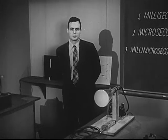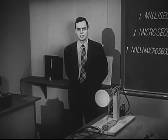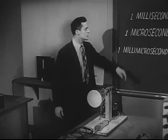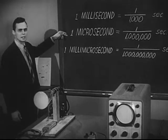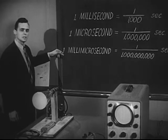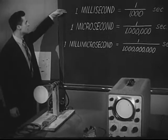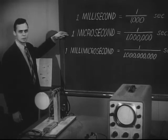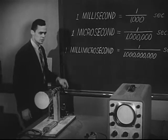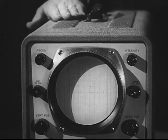As we continue to measure shorter and shorter times, it becomes more and more difficult to refer to them in the way we have. So let's use standard terminology: a thousandth of a second is a millisecond, a millionth of a second is a microsecond, and a thousandth of a millionth of a second is a millimicrosecond. Our photographic technique measured events in the millisecond range. Now let's study things that happen a thousand times faster. To do this, we're going to use the oscilloscope, a very common research tool.